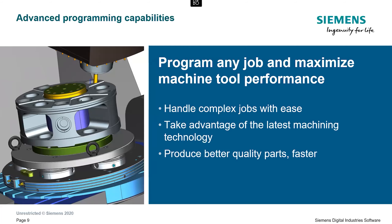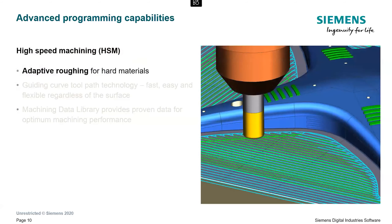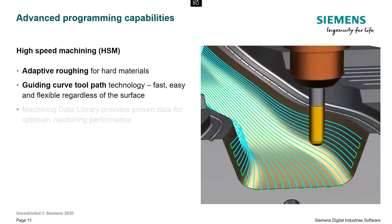Let's explore some of the advanced NX CAM programming capabilities. High-speed machining is an important capability in mold and die, prismatic and complex part machining. The adaptive roughing in NX maintains high metal removal rates while managing tool loads. The guiding curve toolpaths for finishing allow you to create smooth, flowing toolpaths that can follow critical contours or features of a part using simple guide curves. The system can compute the toolpath even over imperfect cut surfaces, resulting in fine finishes at high speed and feed rates.